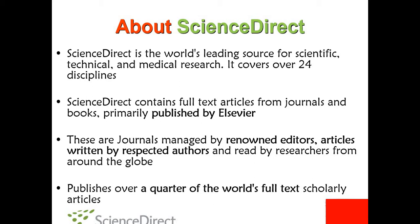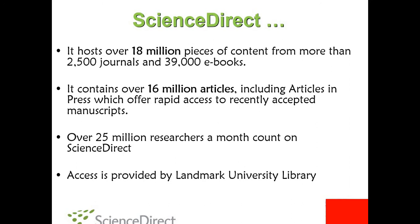Science Direct contains full-text articles from journals and books primarily published by STBF. These are journals managed by renowned editors, articles written by respected authors and read by researchers from around the globe. Science Direct publishes over a quarter of the world's full-text scholarly articles. It hosts over 18 million pieces of content from more than 2,500 journals and 39,000 electronic books, and contains over 16 million articles including articles in press, which offer rapid access to recently accepted manuscripts.